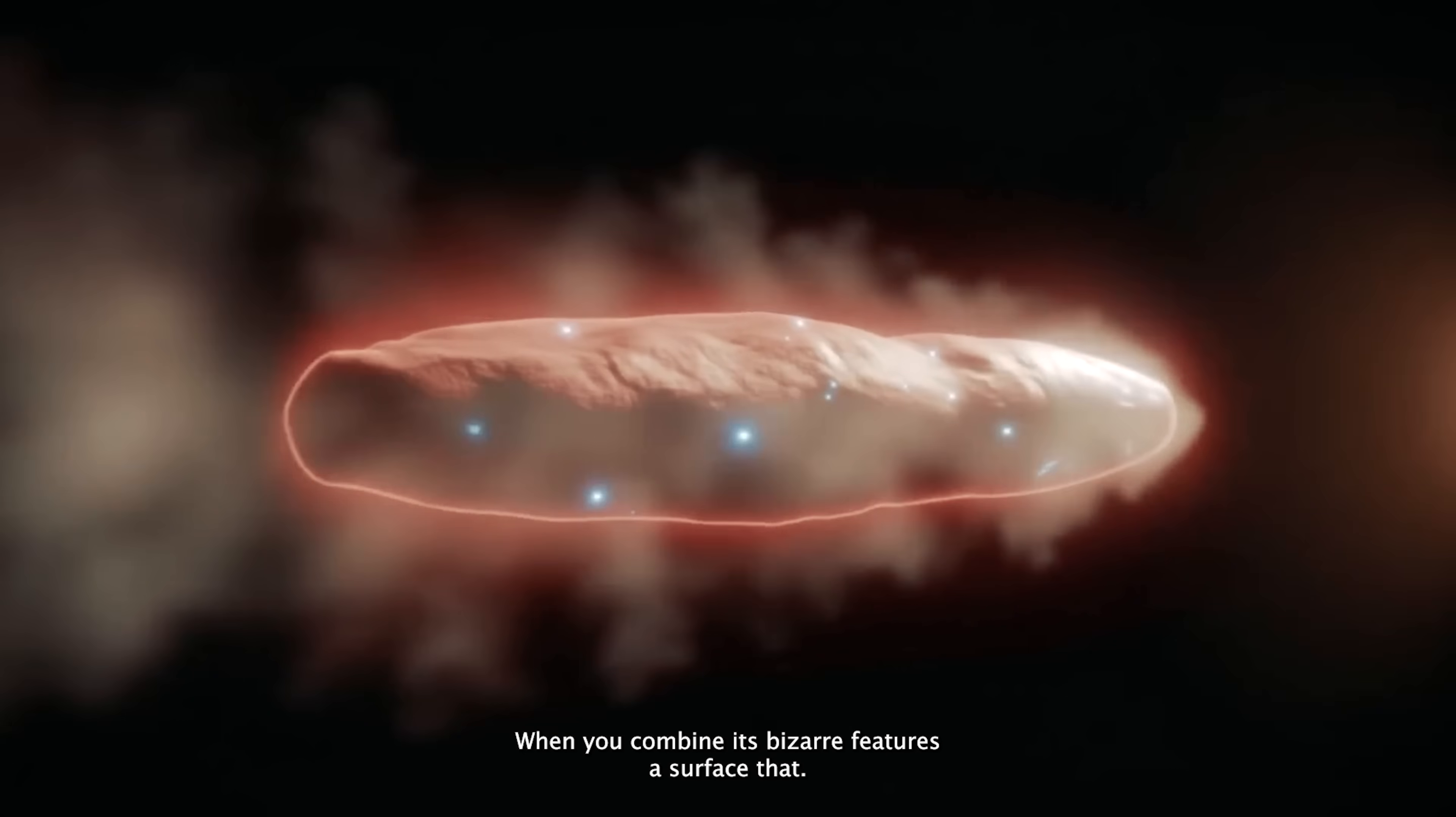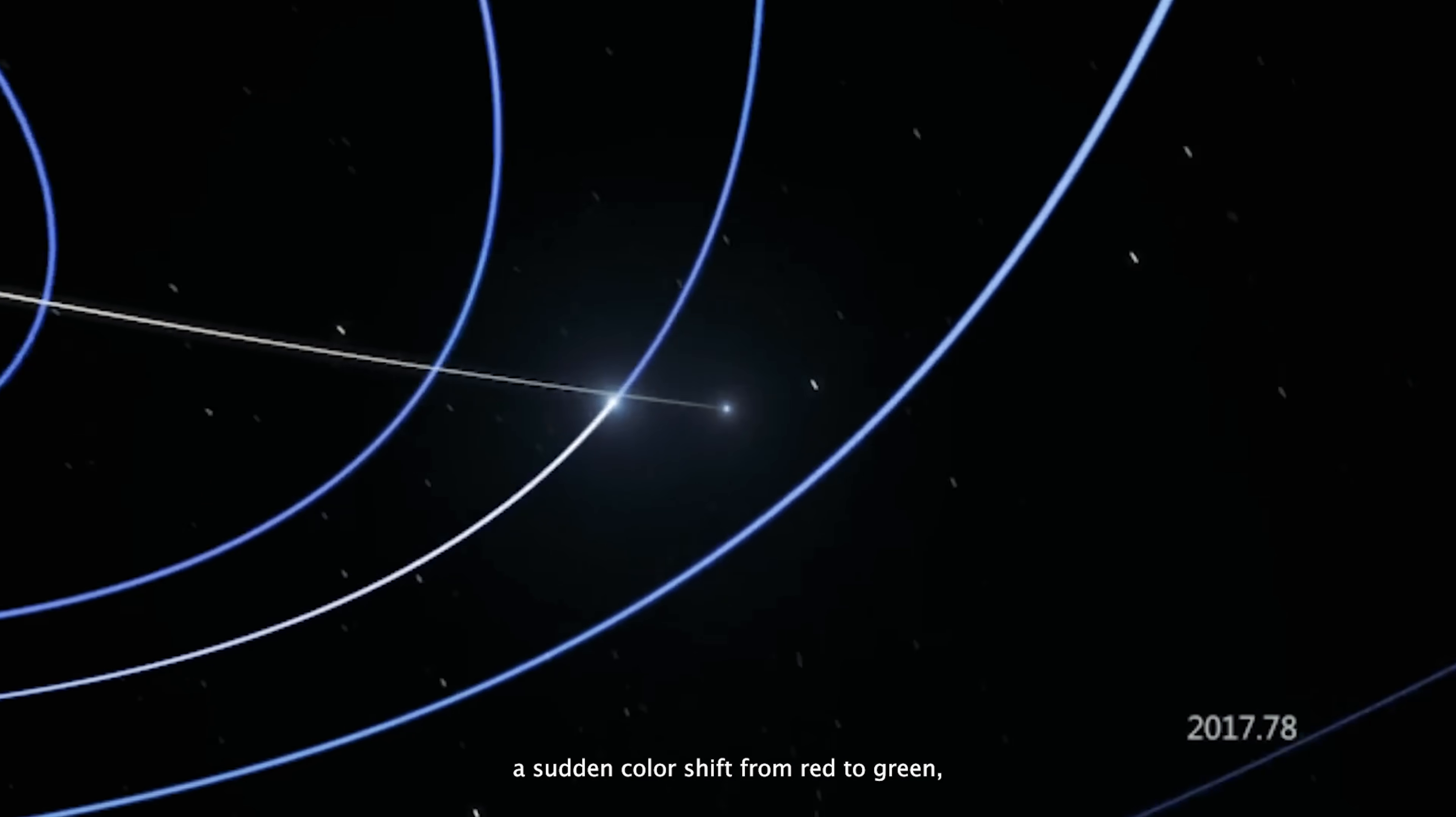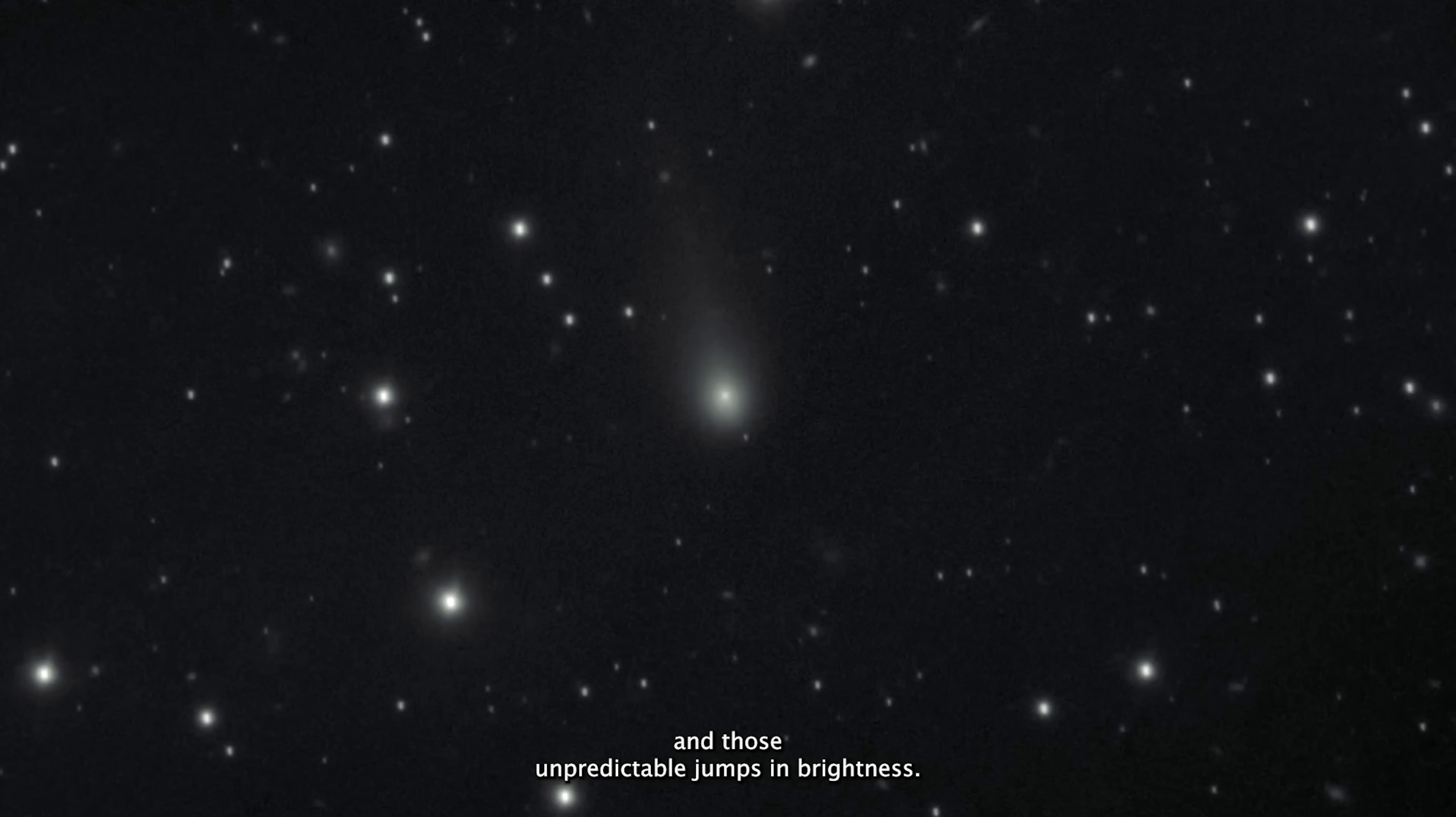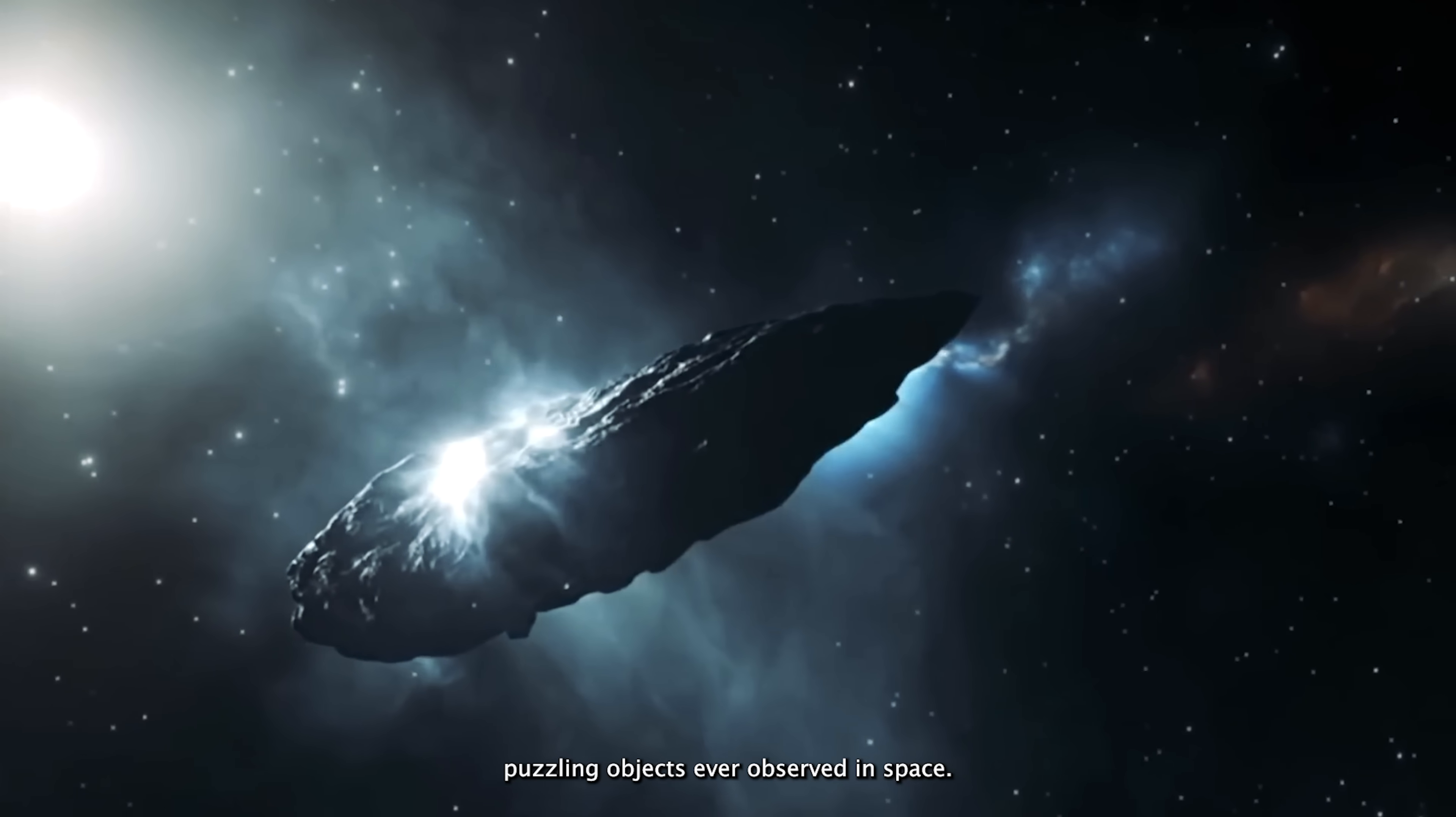When you combine its bizarre features, a surface that seems to glow on its own rather than a typical gas cloud, a sudden color shift from red to green, an unusually precise trajectory through the solar system, an origin pointing toward the same patch of sky that once sent mysterious signals, and those unpredictable jumps in brightness, it's no wonder that 3I Atlas has become one of the most puzzling objects ever observed in space.